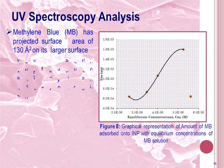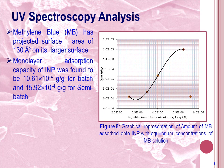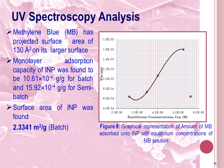Methylene blue has a projected surface area of 130 nm² on its larger surface. From the adsorption isotherm of methylene blue on the iron nanoparticle adsorbent surface, the monolayer adsorption capacity was found to be 10.61 × 10⁻⁴ g per gram for INP produced by the batch procedure, while this value raised to 15.92 × 10⁻⁴ g per gram for semi-batch INP. By performing the necessary calculations, the surface area of batch INP was found to be 2.3341 m² per gram, while this value raised to 455.32 m² per gram for semi-batch INP.